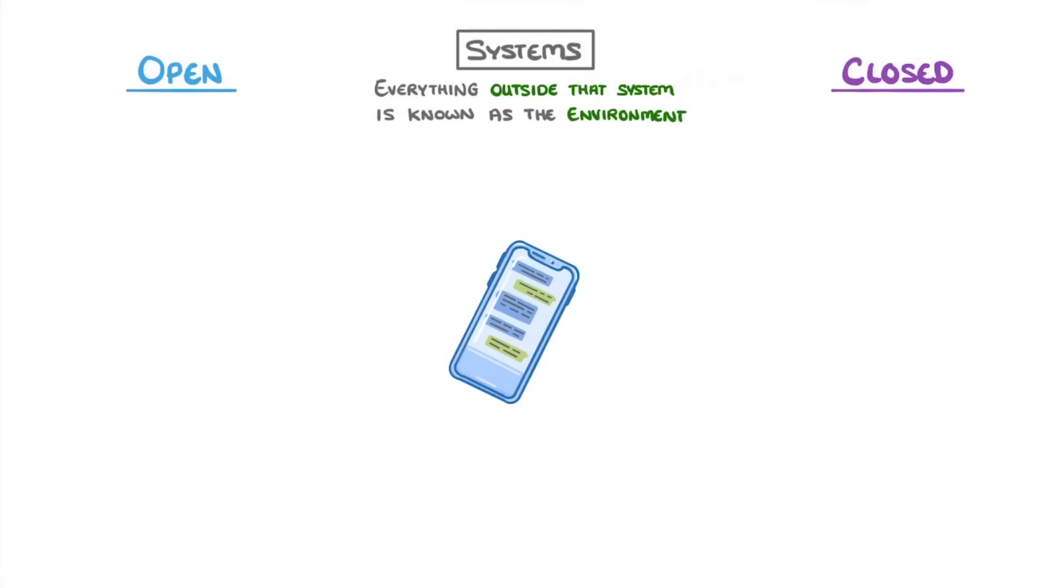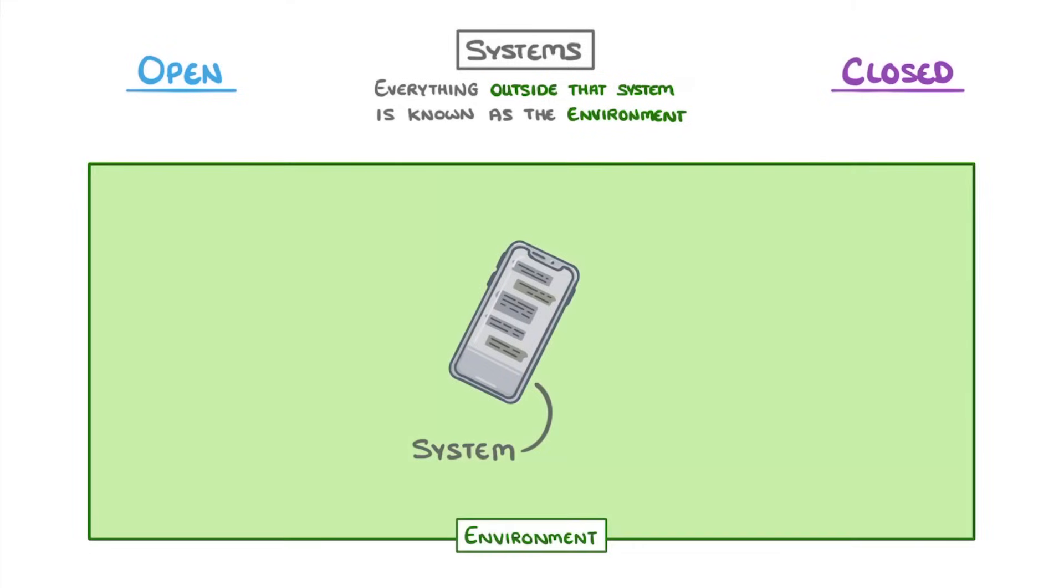So in our phone example, the phone could be considered the system, and everything else in the universe would be the environment. In this case, we would say that the phone is an open system, because energy and matter can freely move between the phone and the environment.